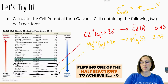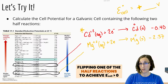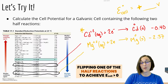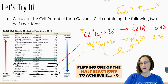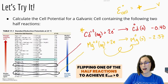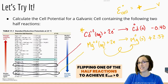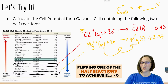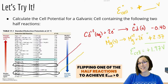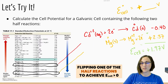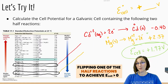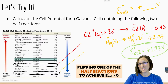Flipping around the cadmium equation will do nothing for us. However, if we flip around the magnesium equation, that should give us a positive 2.37 voltage. Now, when we add together those two values, we do end up with a positive value of 1.97 volts.